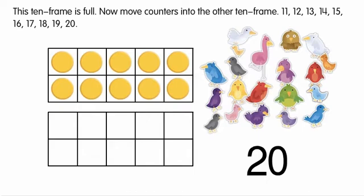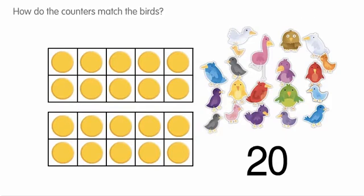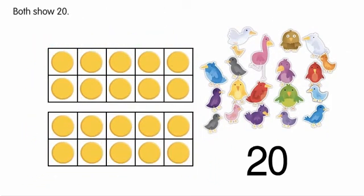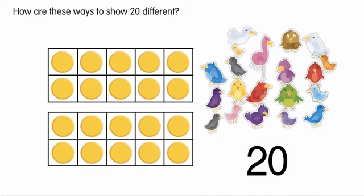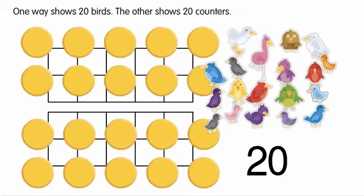Now move counters into the other 10 frame. 11, 12, 13, 14, 15, 16, 17, 18, 19, 20. How do the counters match the birds? Both show 20. How are these ways to show 20 different? One way shows 20 birds. The other shows 20 counters.